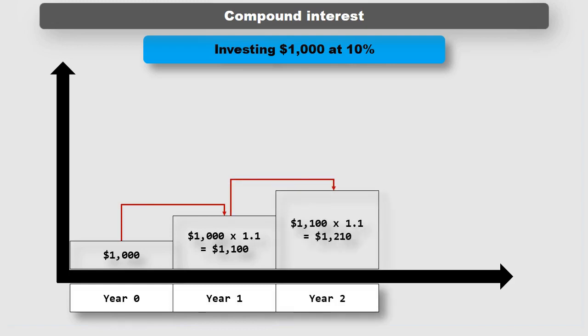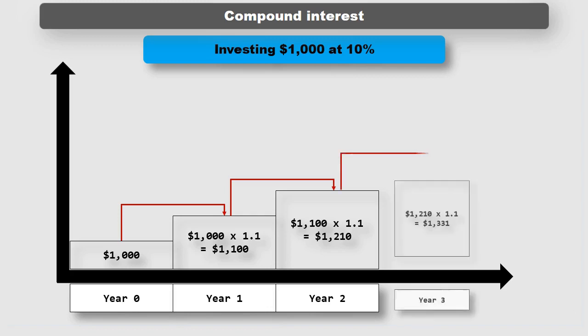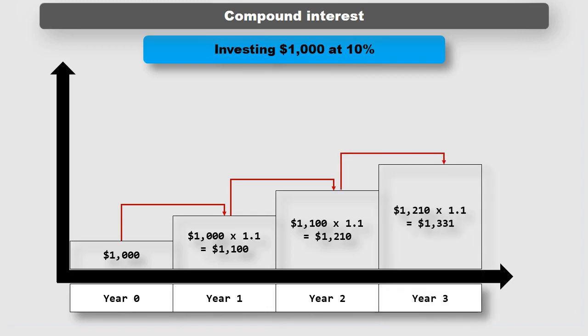By the end of the second year, the balance would be one thousand one hundred dollars times 1.1, equals one thousand two hundred and ten dollars. By the end of the third year, the balance would be one thousand two hundred and ten dollars times 1.1, equals one thousand three hundred and thirty one dollars.